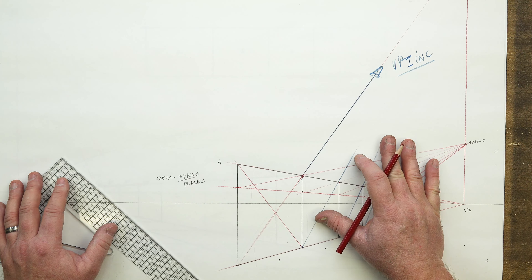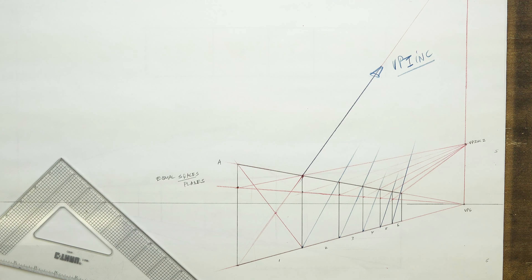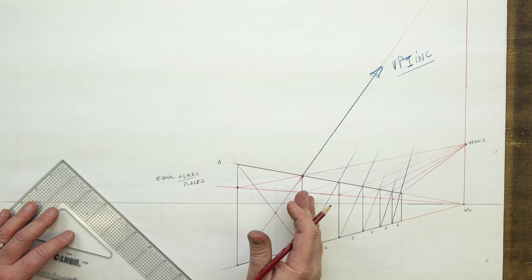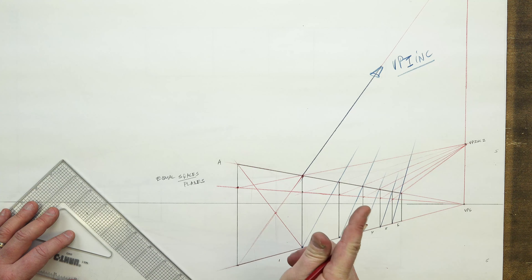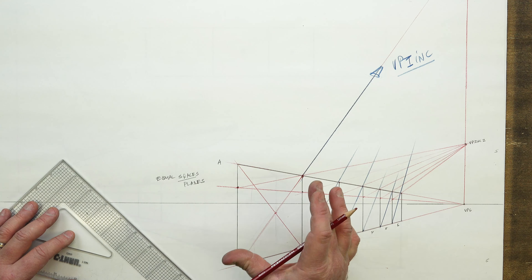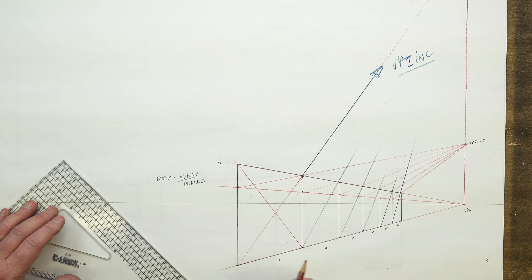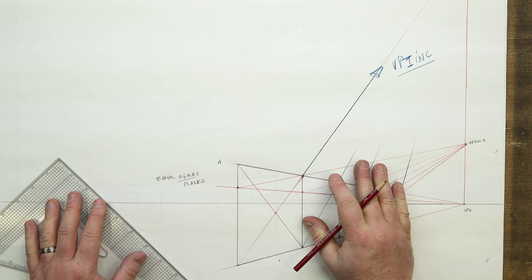Our next lesson will be lesson number ten. We're going to go on to measured perfect cubes with a 45-degree measuring point and a full setup of the fundamental four: the center of vision, eye line, station point, and cone of vision. I'll show you how to use a measuring point from the station point at 45 degrees, so you'll need a 45-degree triangle, and how you can get perfect cubes in perspective inside the cone — and what distortion looks like outside of it.